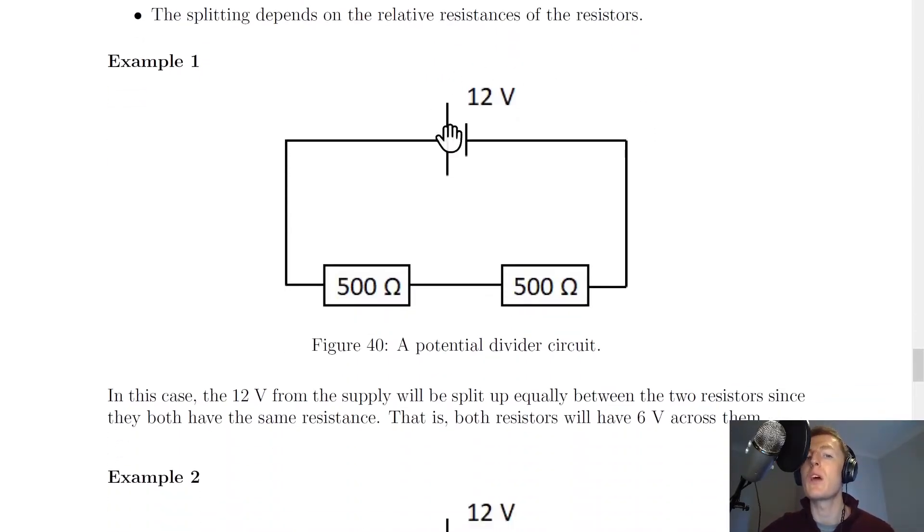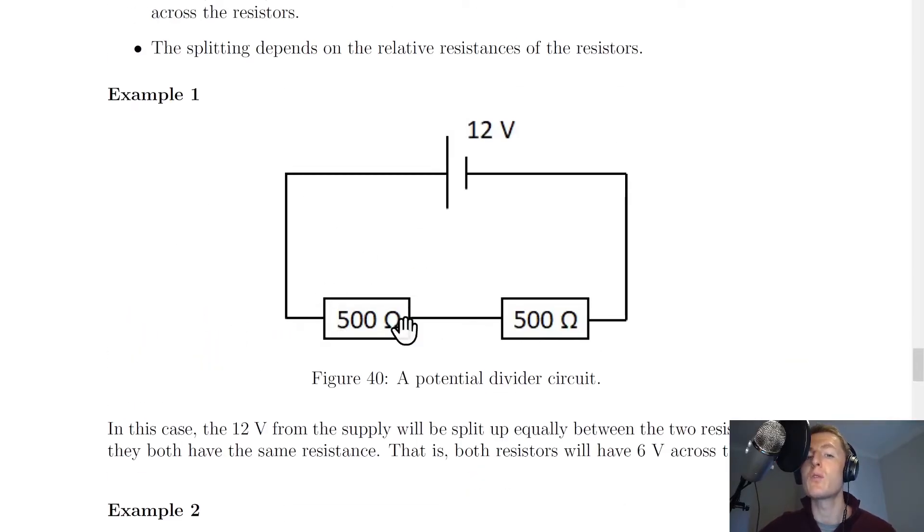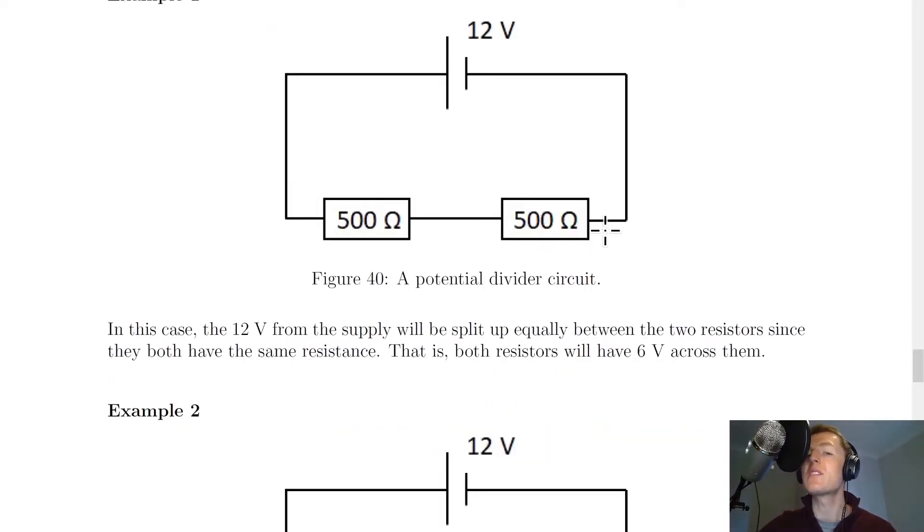So here's our first example where we've got a 12 volt battery and two 500 ohm resistors, two identical values of resistors. In this case, the 12 volts from the supply will be split up equally between the two resistors since they both have the same resistance. That is, both resistors will have 6 volts across them. So 6 volts and 6 volts will add up to give us the 12 volts there. This 12 volts is being divided up across each of these components, or it's being shared equally between the two resistors. And because they've got the same resistance value, then they take an equal share of the voltage.